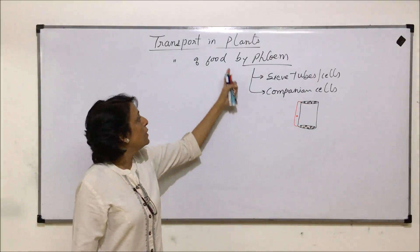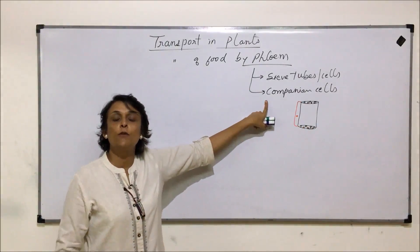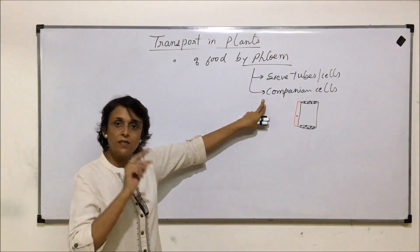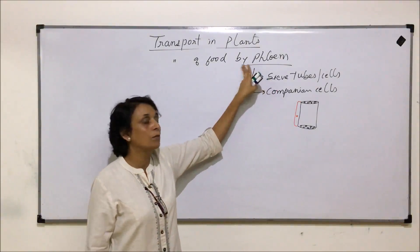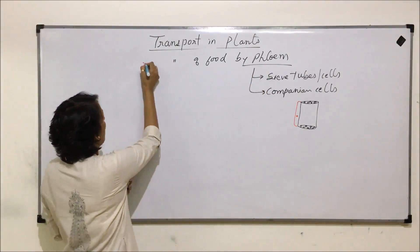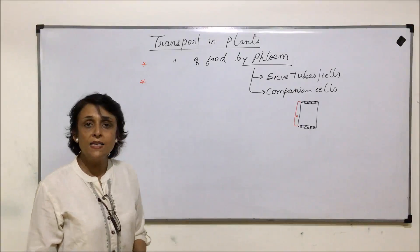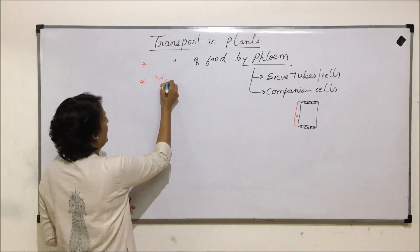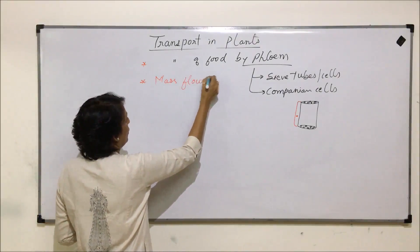Now we have not talked about two other things — phloem fiber and phloem parenchyma. We are just discussing the two main cells which are helping in this movement of food. The movement of food is by mass flow hypothesis.